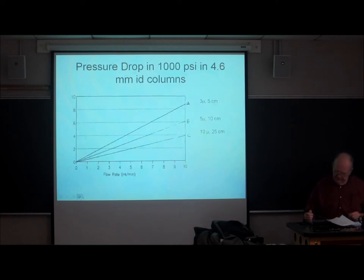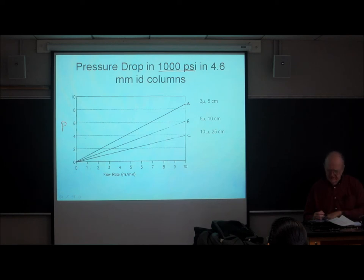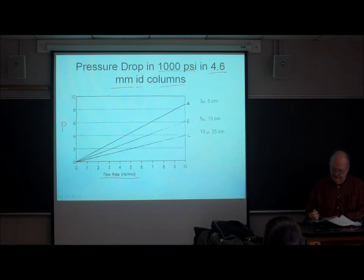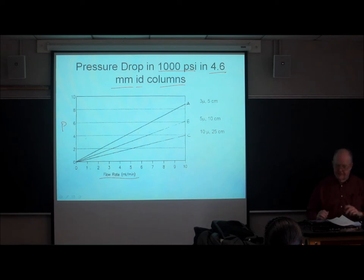Here's a plot of pressure in thousands of PSI for a 4.6 mm ID column, plotted against flow rate — because what we set on the pump is flow rate, not linear velocity. This is shown for three representative columns: 3 micron, 5 cm; 5 micron, 10 cm; and 10 micron, 25 cm. Those were chosen because the plate counts are about the same.